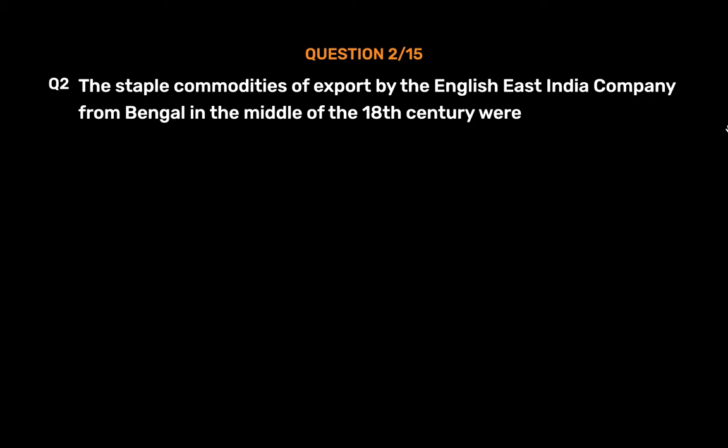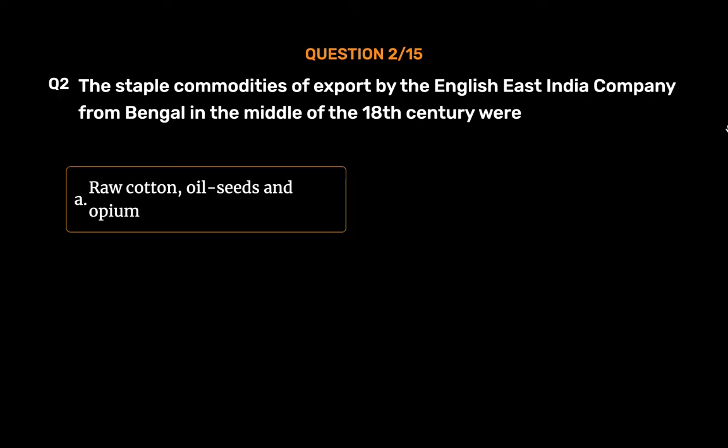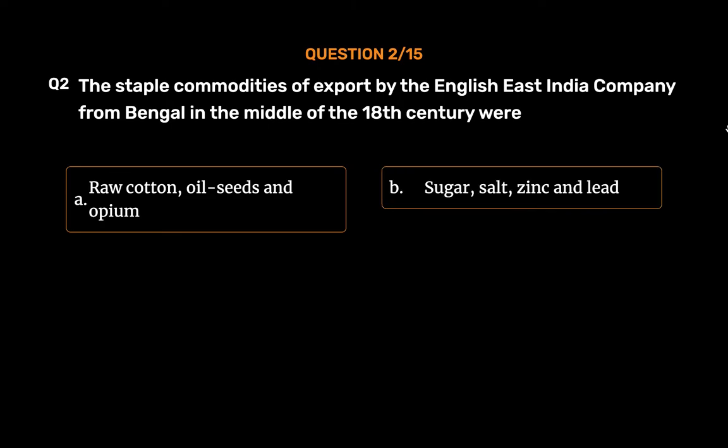Question No. 2. The staple commodities of export by the English East India Company from Bengal in the middle of the 18th century were: Option A: Raw cotton, oil seeds and opium. Option B: Sugar, salt, zinc and lead.